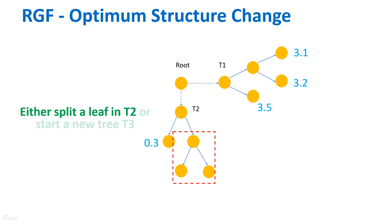In the figure as an example, we can split an existing leaf node in T2 or start a new tree as T3, ensuring that the regularized loss function is reduced as much as possible.